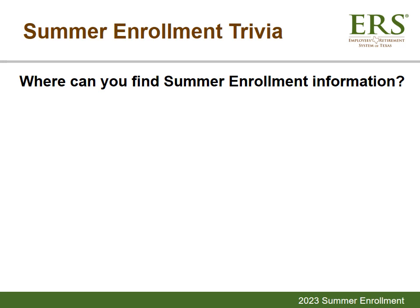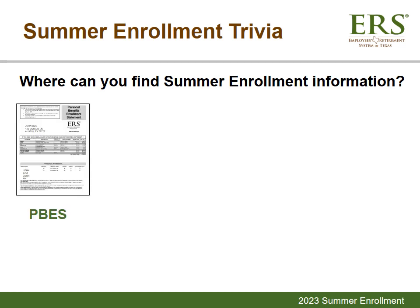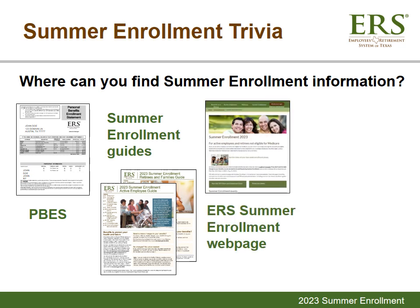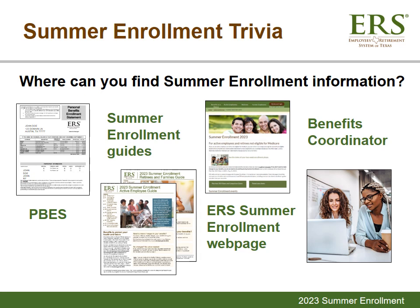Where can you find Summer Enrollment information? You can find information in your Personal Benefits Enrollment Statement that is mailed to you before your Summer Enrollment phase. You can read your Summer Enrollment Guide that you receive with your Personal Benefits Enrollment Statement. You can view the Summer Enrollment web page, and you can speak to your Benefits Coordinator.